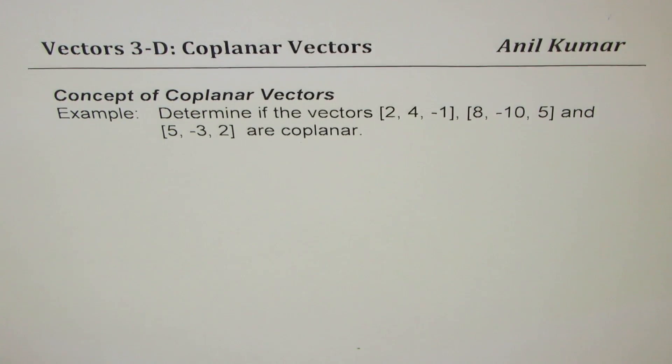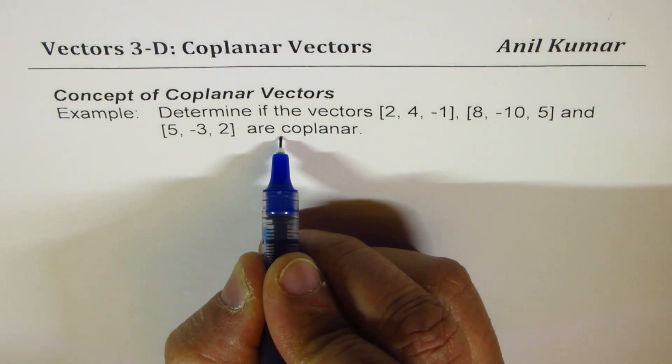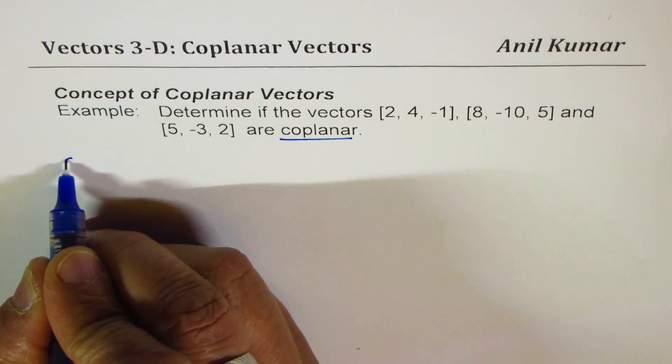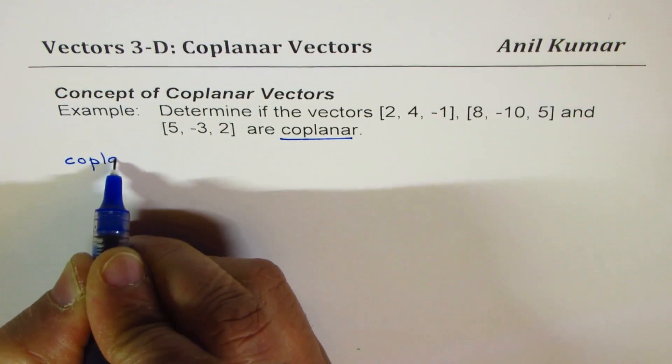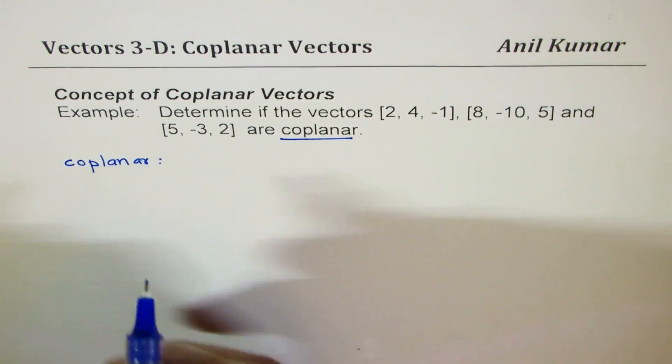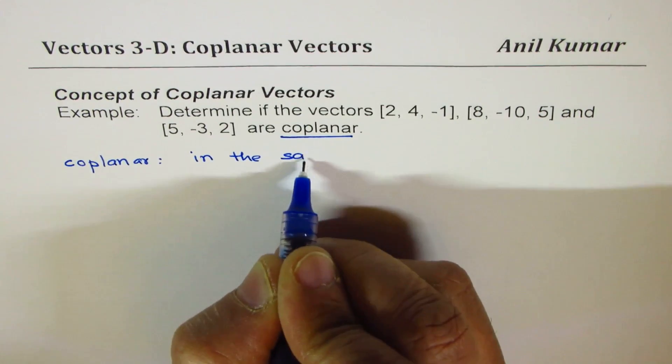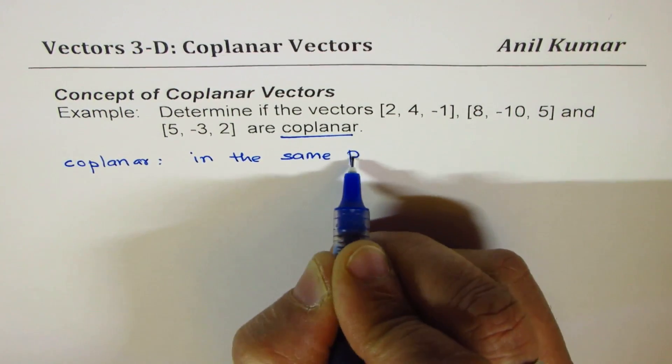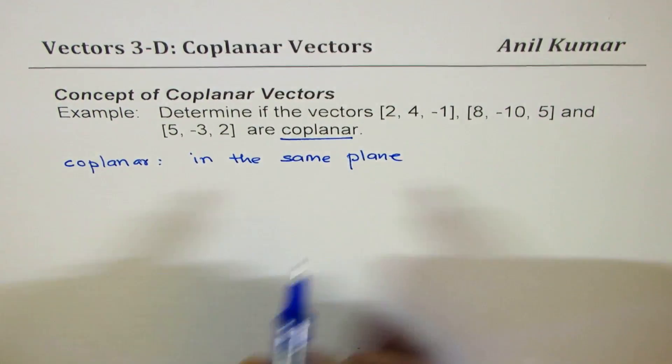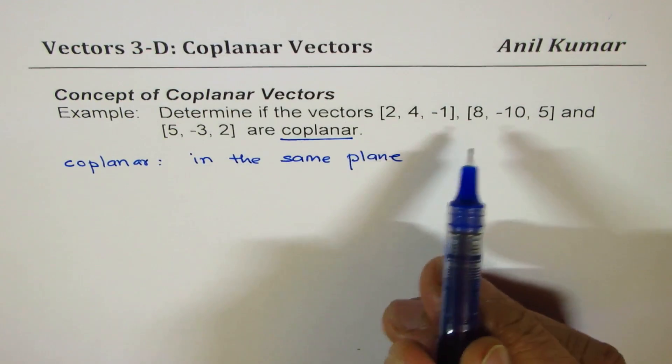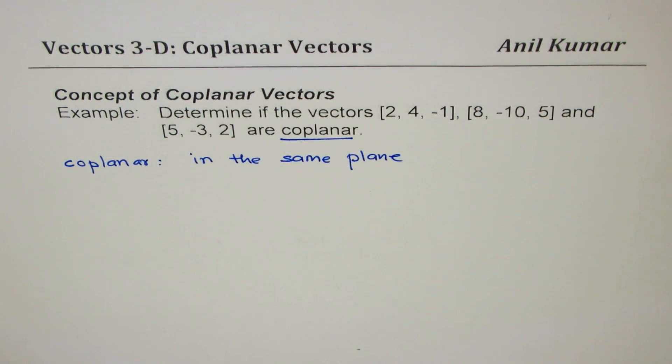Now what do we understand by coplanar vectors? Let's understand the term coplanar first. Coplanar means in the same plane.